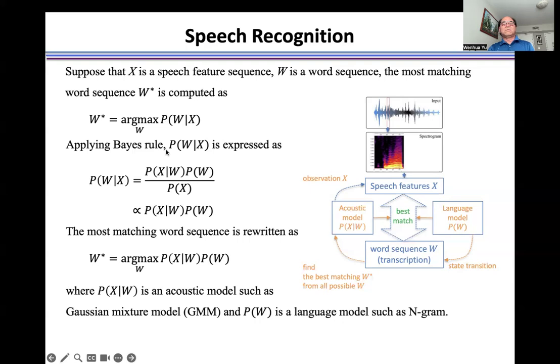Applying Bayes rule, P(W|X) is expressed as the product of two probabilities. The most matching word sequence is rewritten as this formulation in the same way.